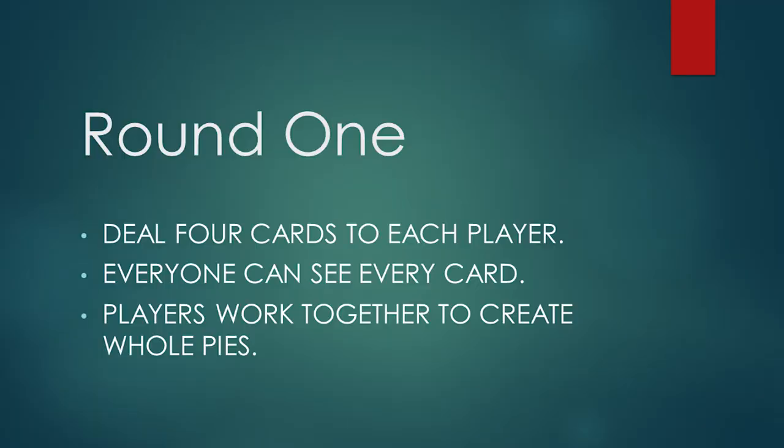For Round 1, players work together to create whole pies. Deal four cards face up on the table in front of each player. Players can see each other's hands. They take turns playing one of their cards, then choosing a card from another player to try to make a whole pie. They should use the pie graph paper to draw each fraction.